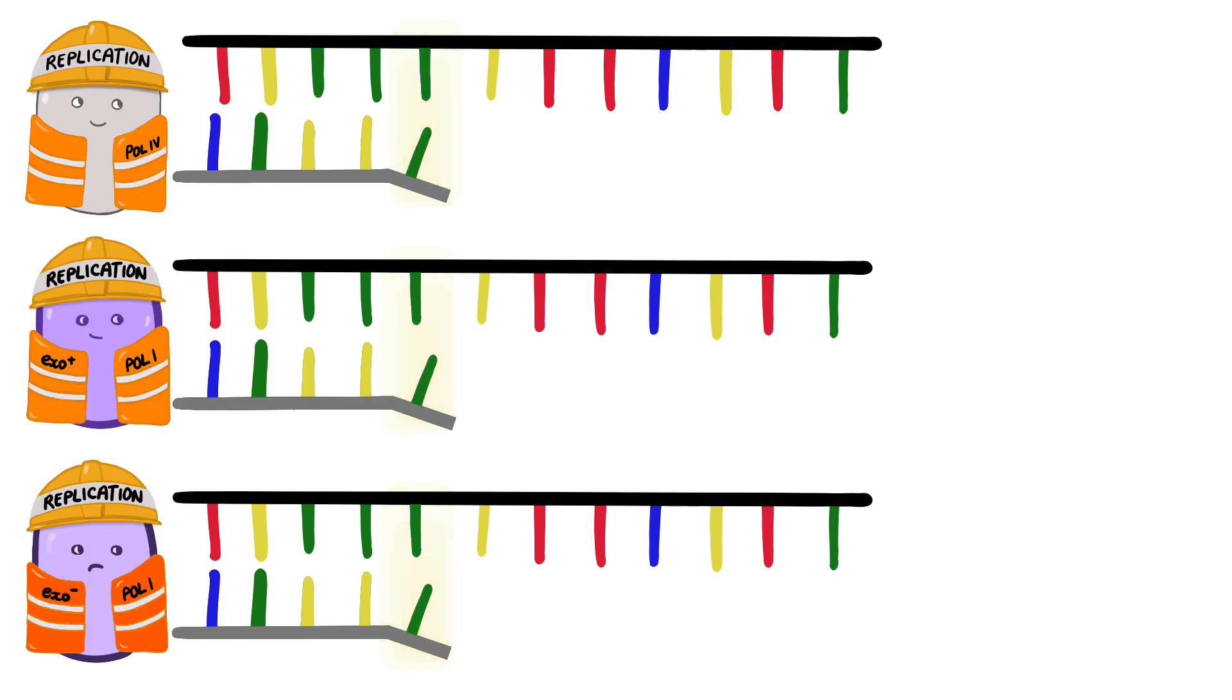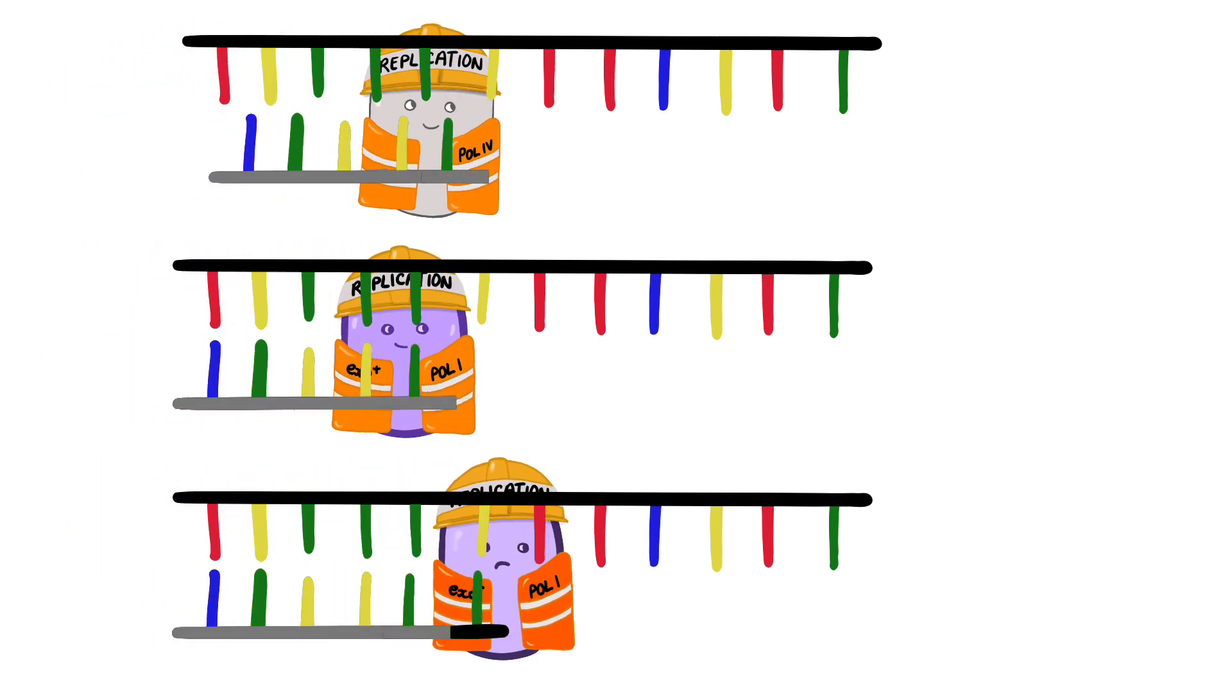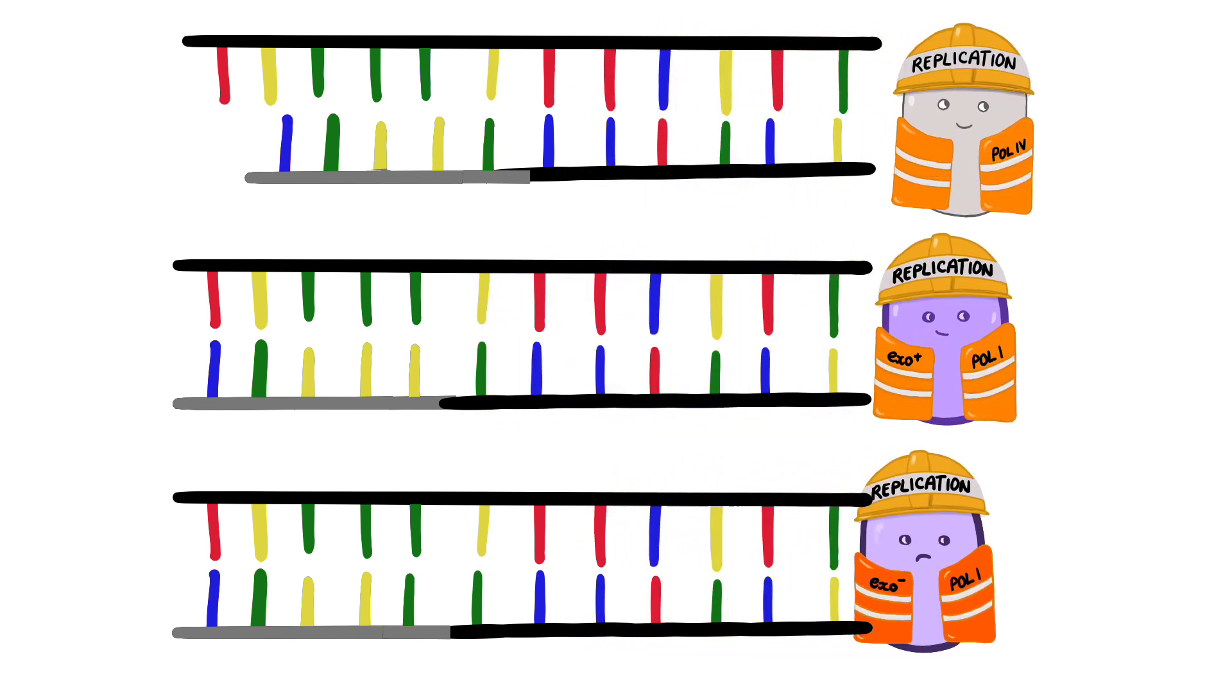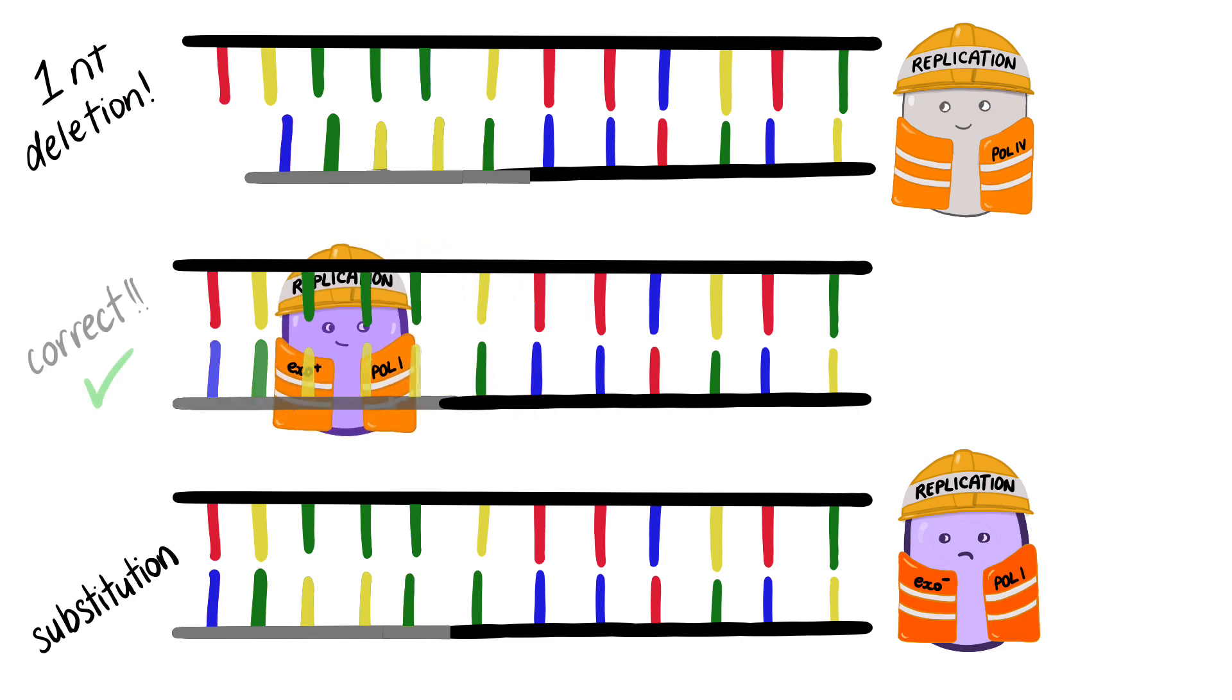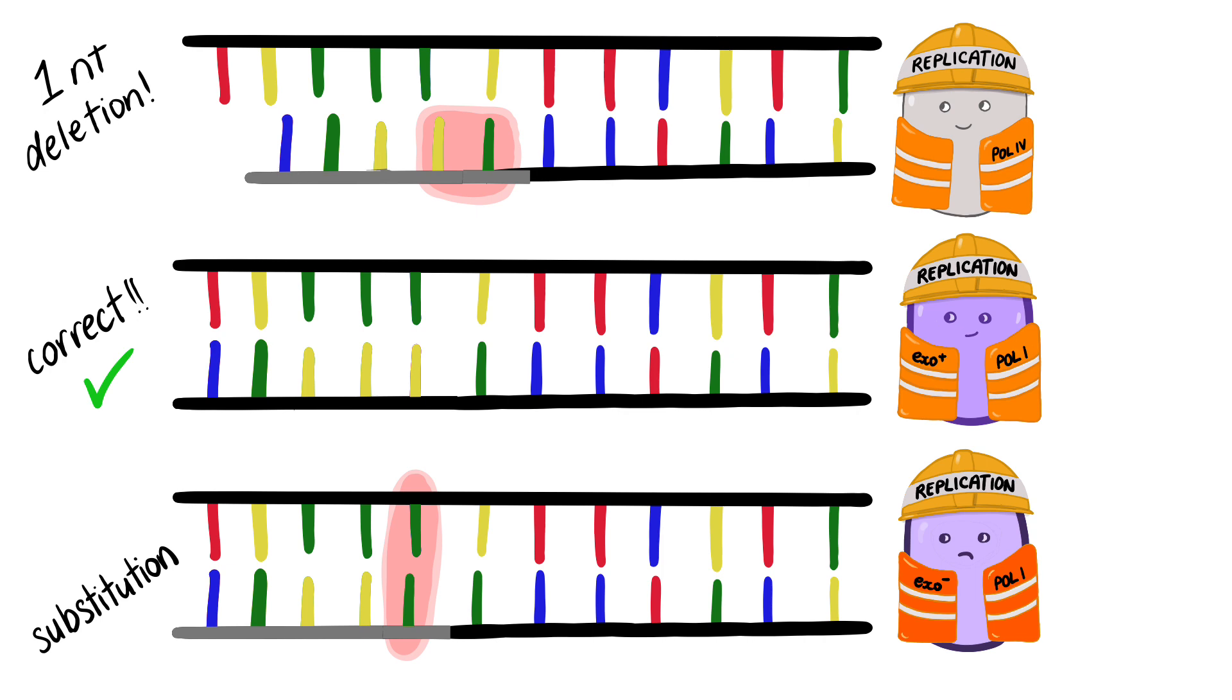The researchers then added primers with three-prime terminal mismatches. DIN B extension products consistently had one nucleotide deleted, resulting in minus-1 frameshift mutations. In contrast, both Pol1 strains generated the correct length nucleotide sequence. This was expected from previous research, but these scientists went a step further and sequenced the products to find the specific nucleotide which gets deleted.